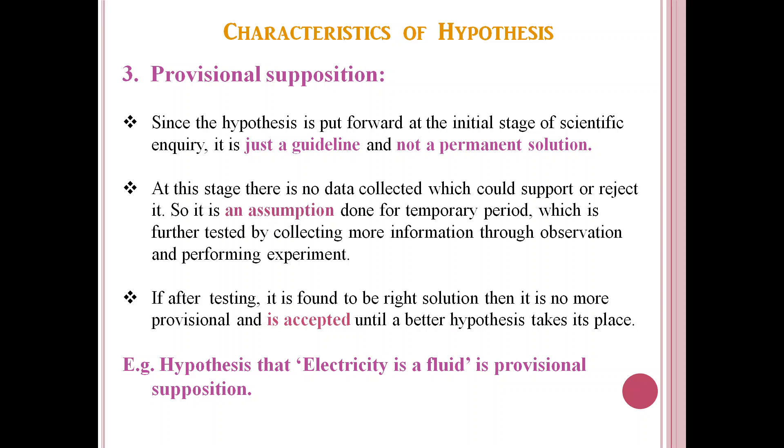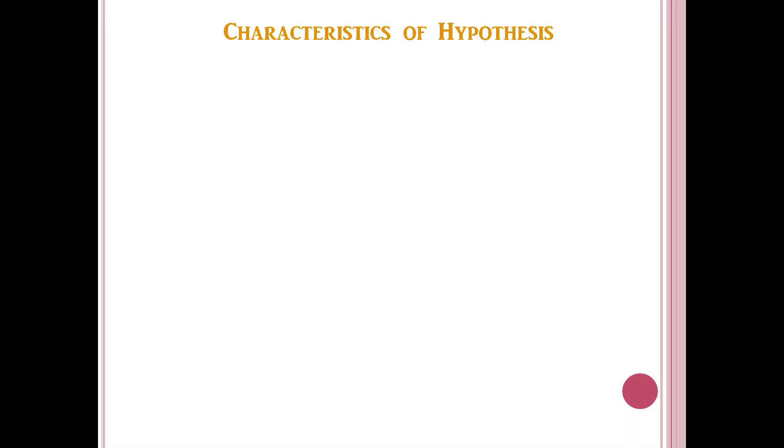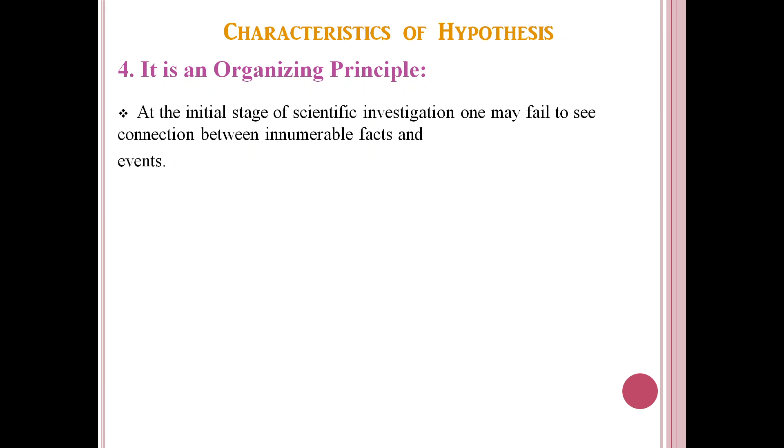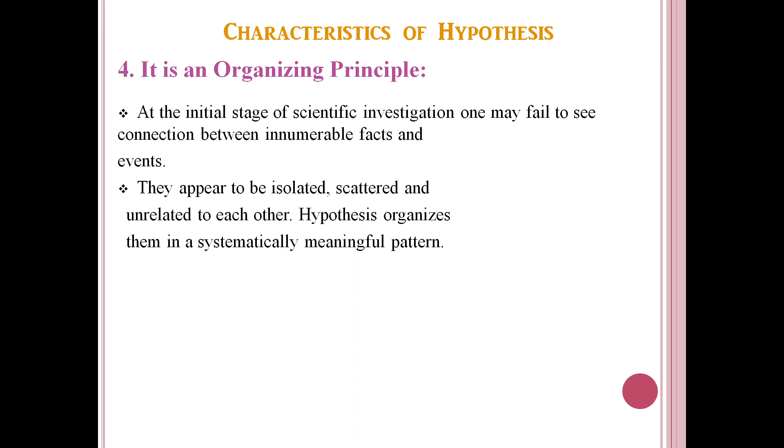Now, we come to the fourth characteristic of hypothesis. It is an organizing principle. We know that at the initial stage, the scientist goes to nature to collect information from it, but he finds no meaning to the events as he perceives no connection between them. They appear isolated, scattered and unrelated to each other.